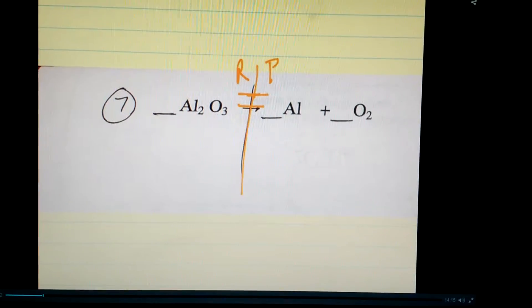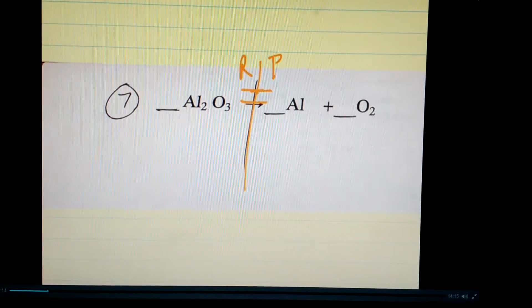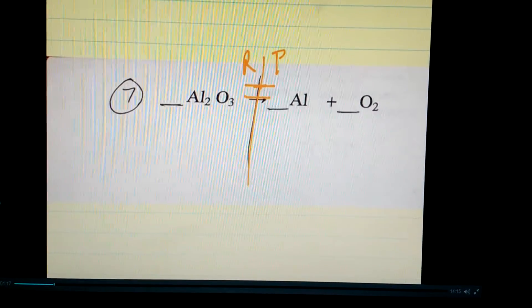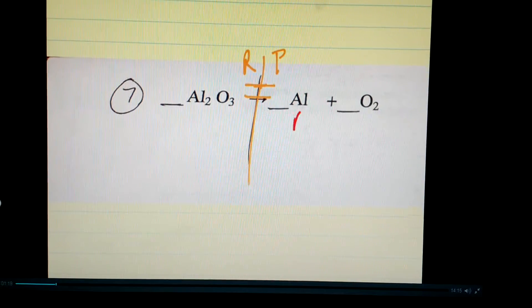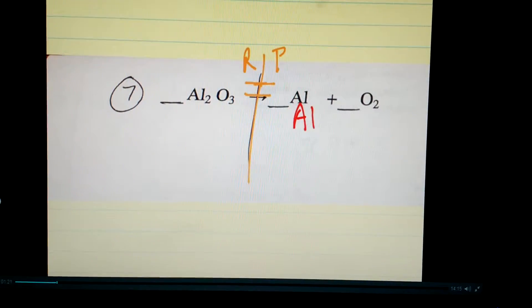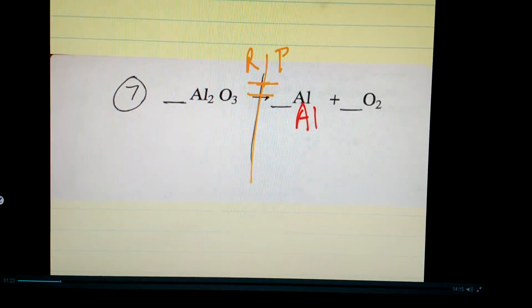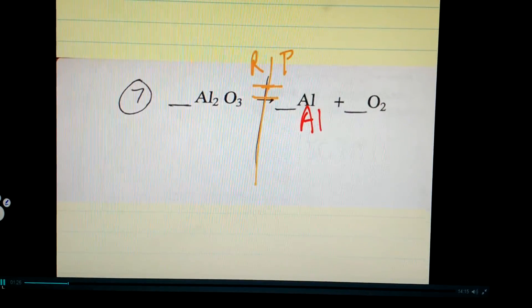That's what the arrow or yield sign is indicating to you. That means since you have two aluminums on the reactant side, you're going to need to have two aluminums on the product side. So go ahead and add another aluminum. Your aluminums are balanced.